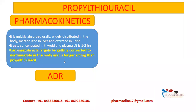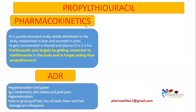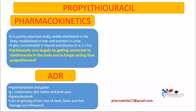The adverse drug reactions of propylthiouracil include hypothyroidism and goiter due to overtreatment, which is reversible upon stopping the drug and indicated by thyroid gland enlargement. Other side effects are GI intolerance, skin rashes, joint pain, greying of hair, loss of taste, fever, and liver damage, though these are infrequent. A rare but serious adverse effect occurring in about 1 in 1000 cases is agranulocytosis, which is also reversible.